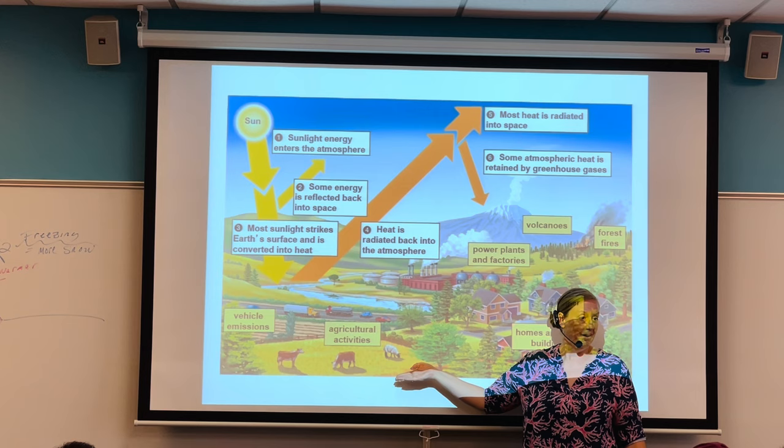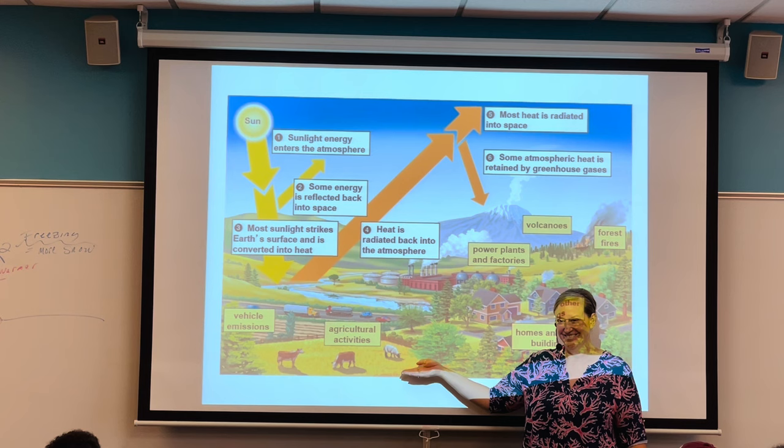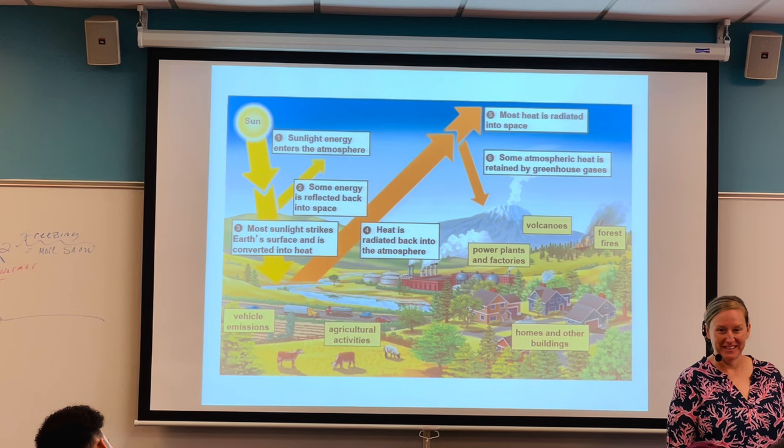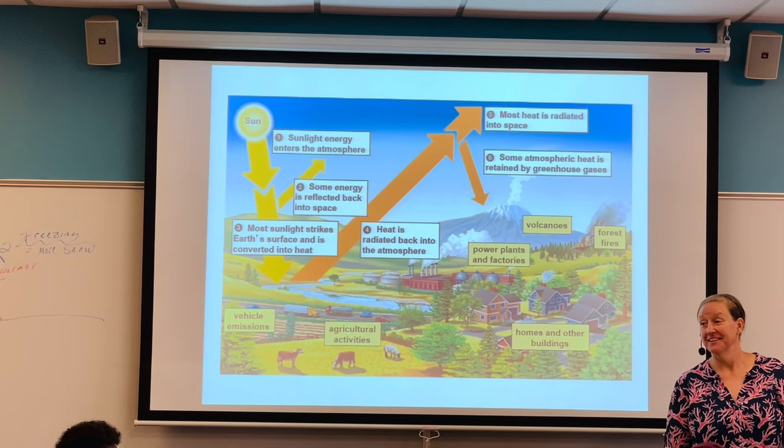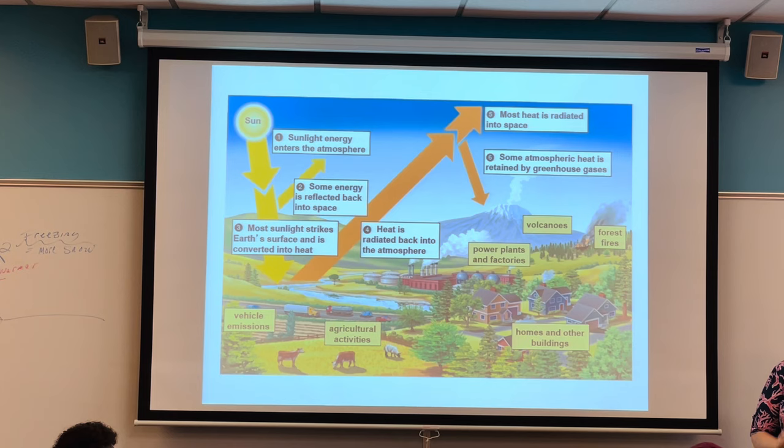So one solution to lowering climate change is decreasing the number of cows, which means decreasing what we eat. There's a good case for lowering climate change by simply not eating beef. But we never hear about that because humans don't want to change too many things.